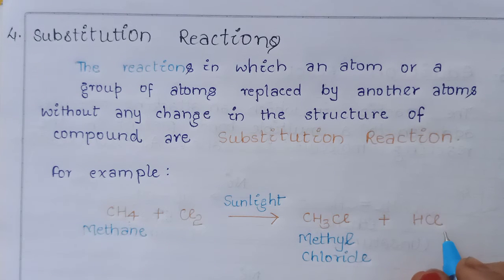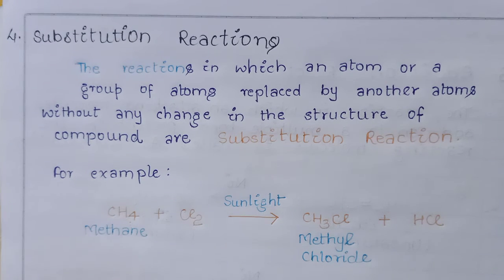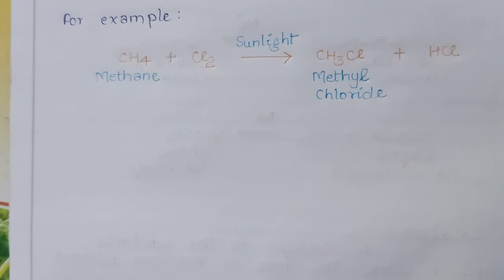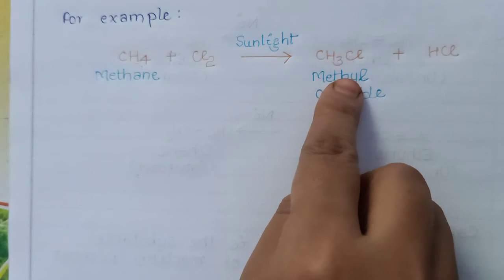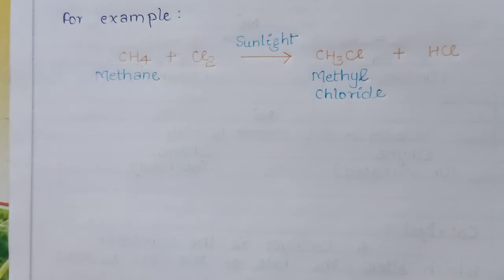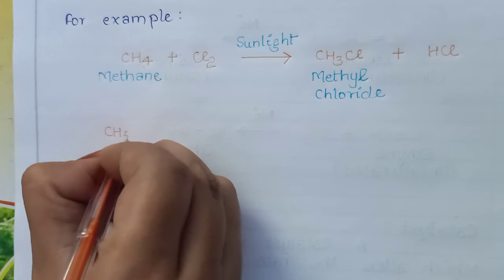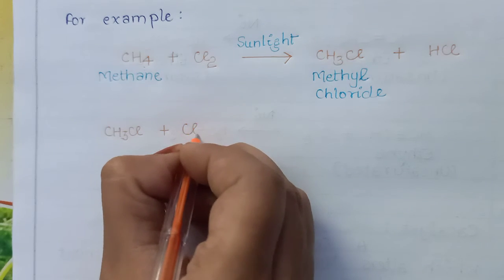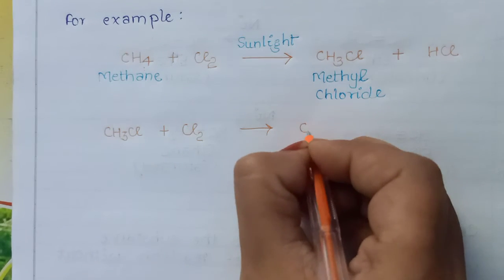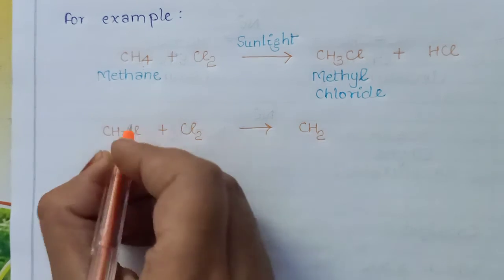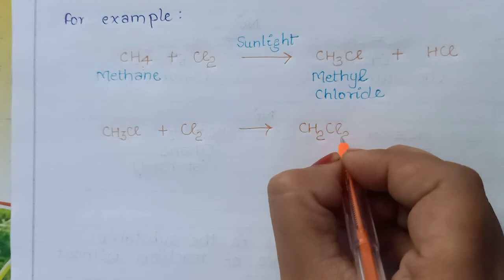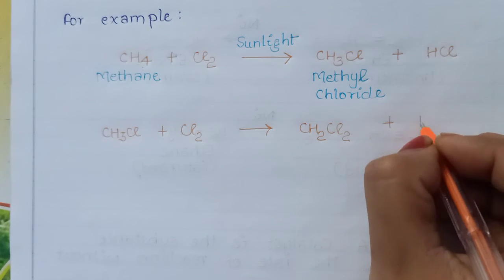Now we take another step of this reaction. When CH3Cl further reacts with Cl2, another hydrogen atom is replaced by a chlorine atom to form CH2Cl2, and again HCl is formed.